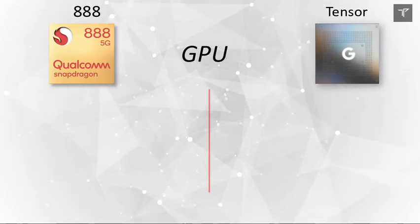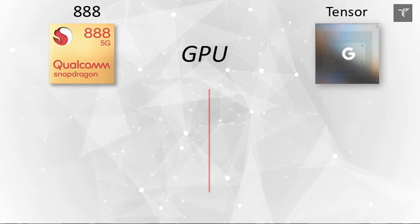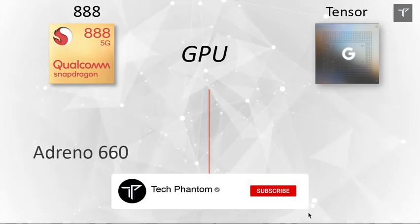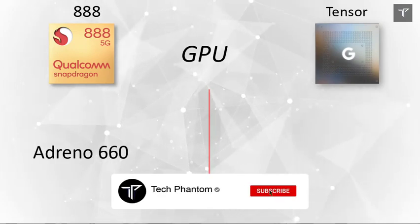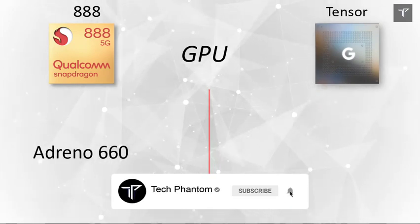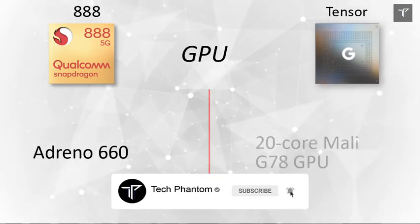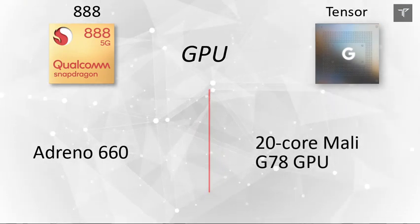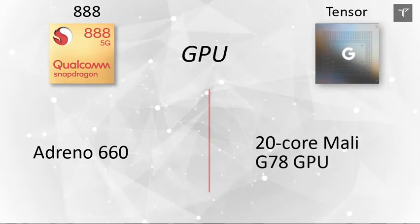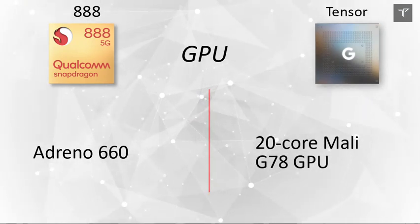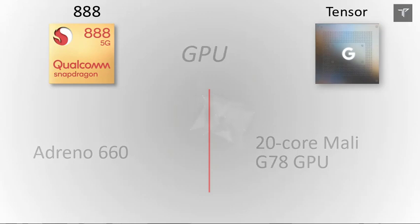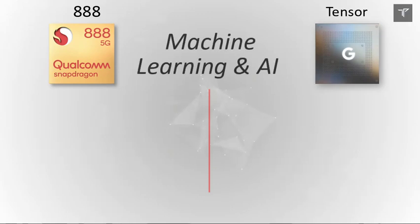Talking about the GPU: the Snapdragon 888 uses the Adreno 660, whereas the Google Tensor has a custom Mali-G78 GPU with 20 cores, which is higher than any other GPU currently found in smartphones.